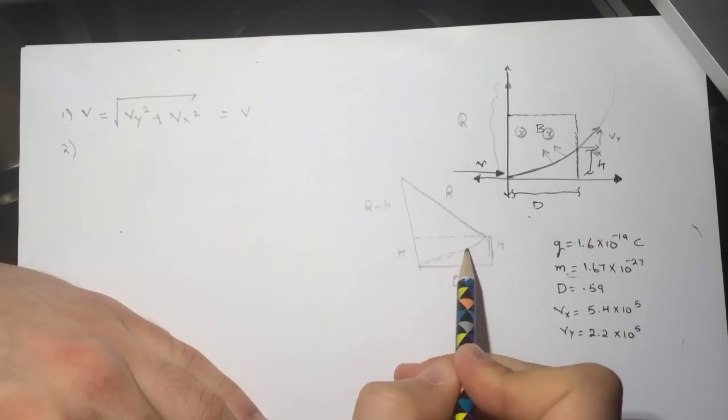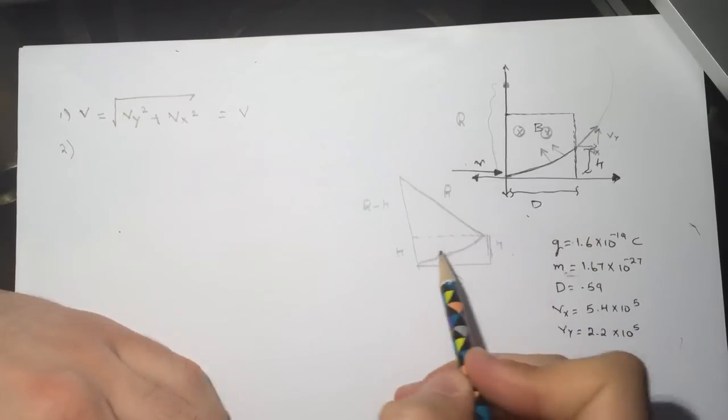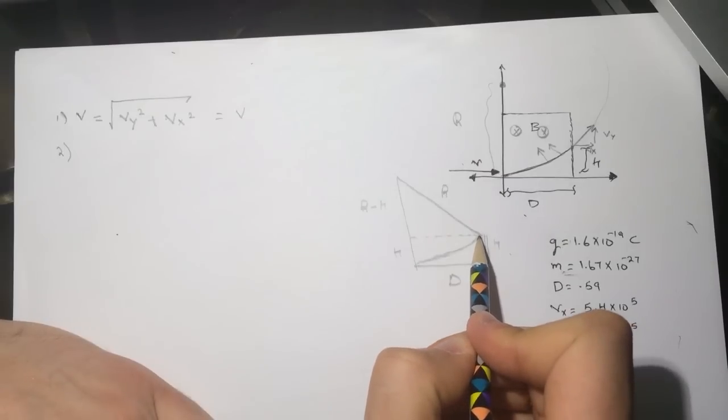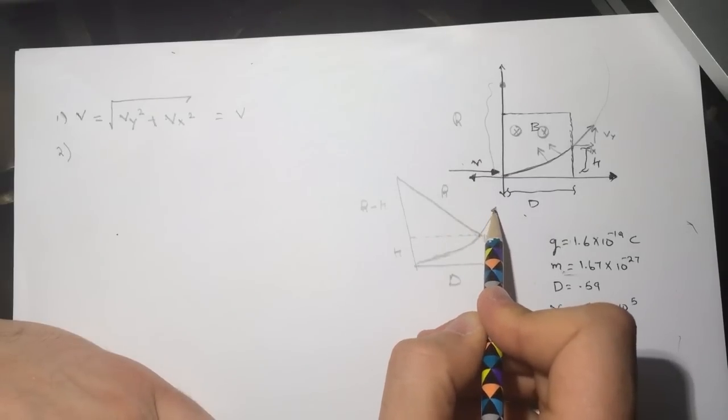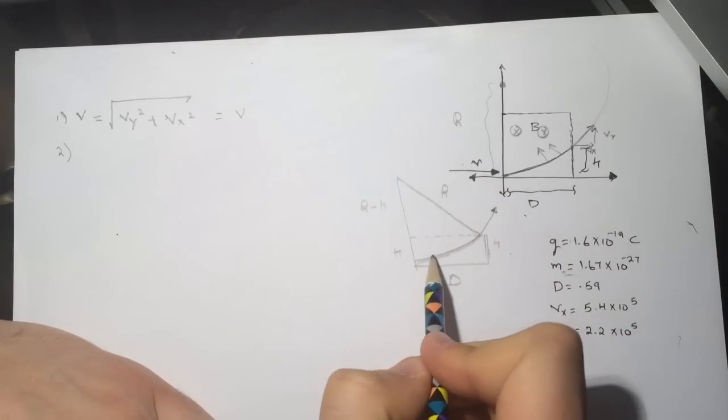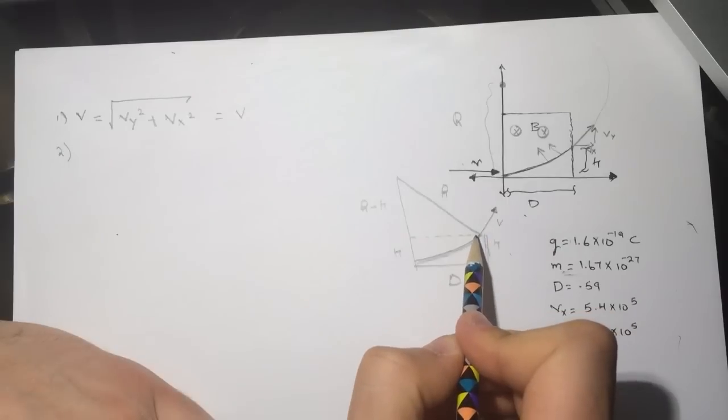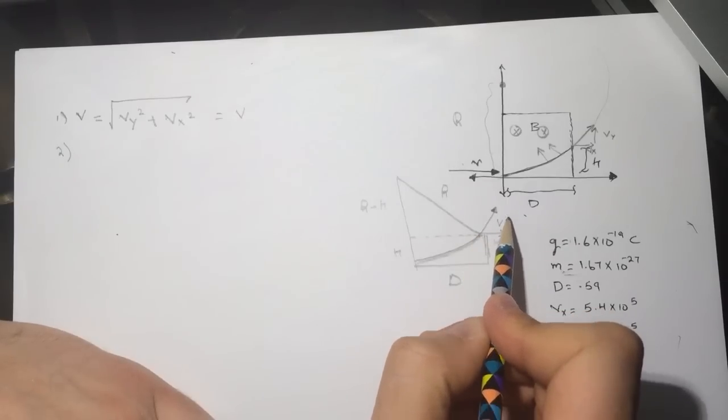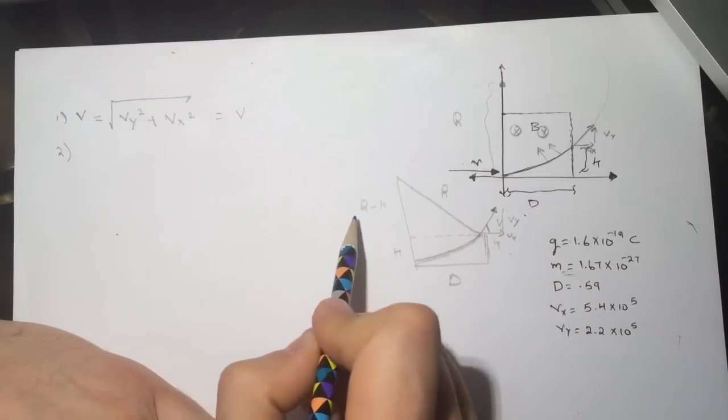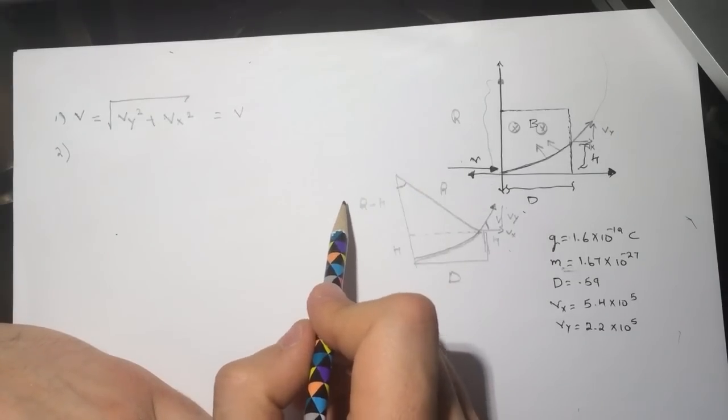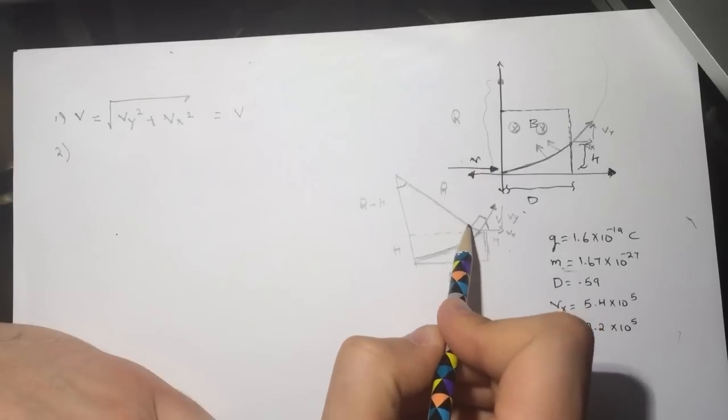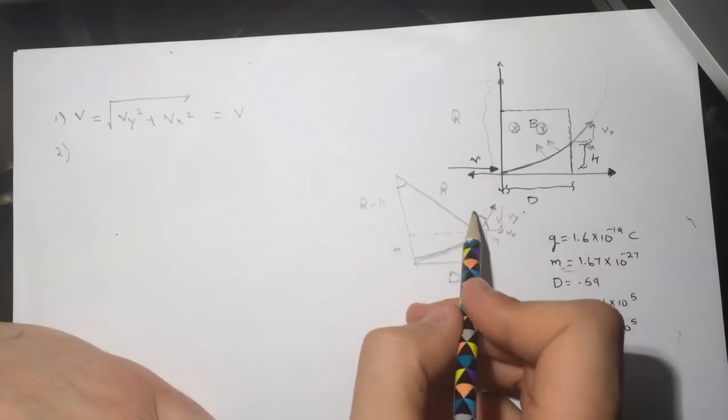Then this is still H and this is D, you can see here. And this is the curvature, the part of the circle. And you can see that the V is tangential to the circle. This is the V, and here's the Vx and the Vy. Okay, so this angle is the same as this angle here.